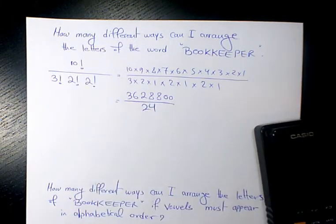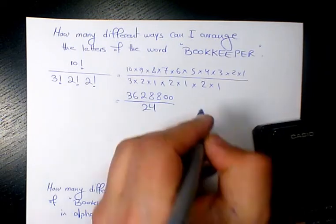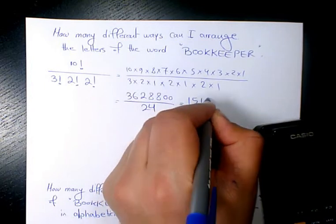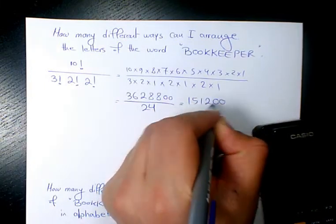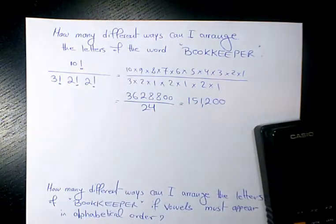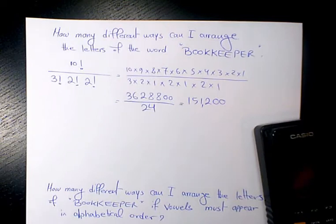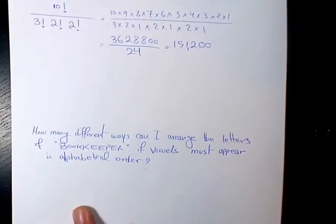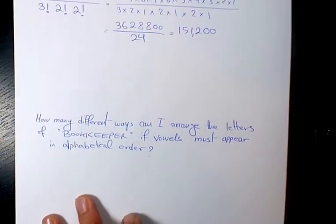So 3,628,800 divided by 24 is going to be 151,200. It's going to be 151,200 different ways to arrange the letters of bookkeeper.